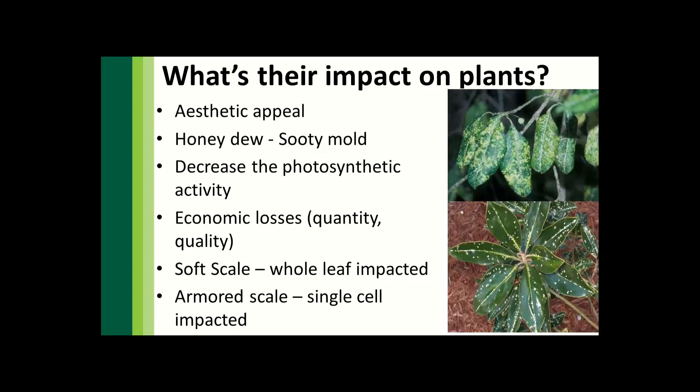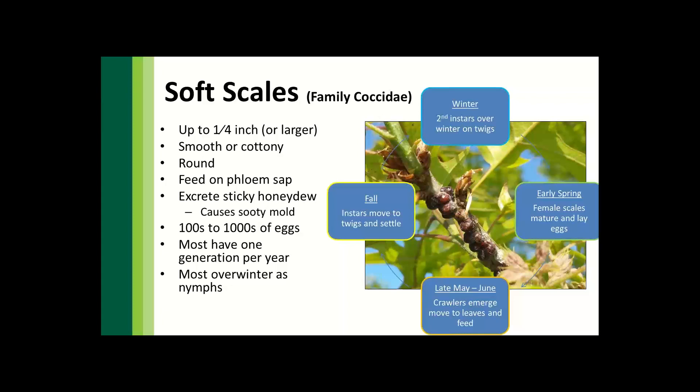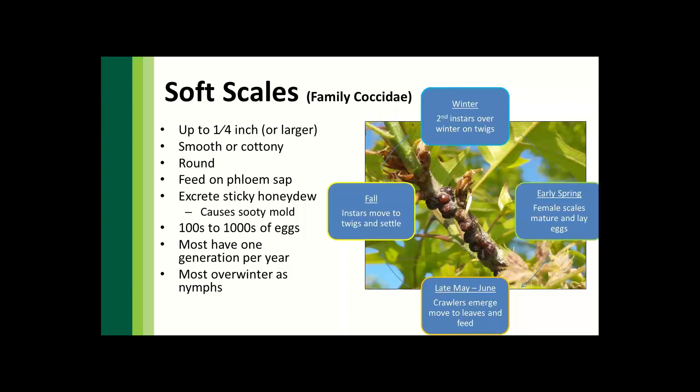Looking deeper into soft scales, from the family Coccidae, there are really only two of practical importance for landscape practitioners. They're typically larger — up to a quarter inch or larger. The scale exterior is typically smooth or has a cottony outer appearance, and they're generally rounded in shape. They feed on phloem sap, which is where the honeydew comes from. As they insert that stylet, it's basically a tube — the plant's phloem pressure pushes through them and the excess sap flow is excreted, which causes sooty mold.